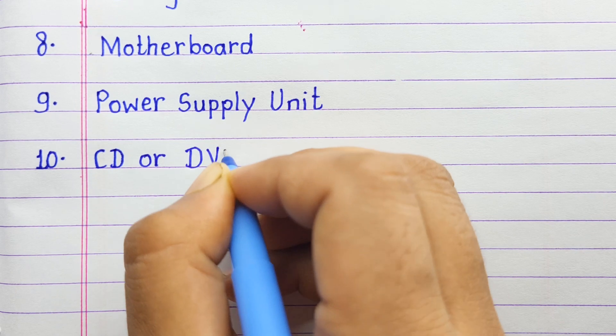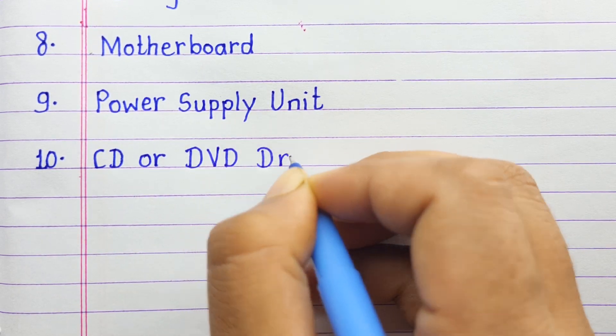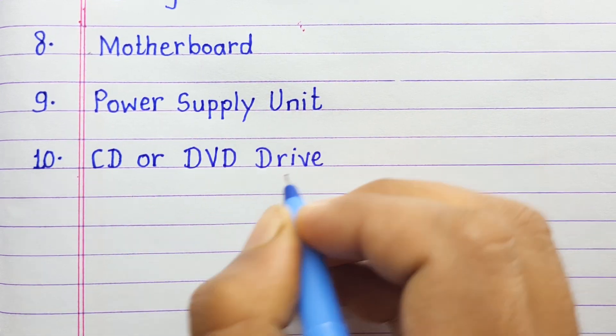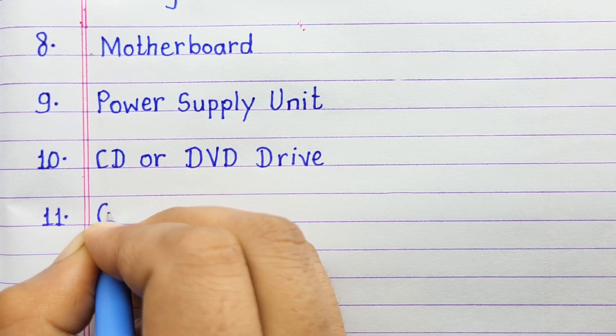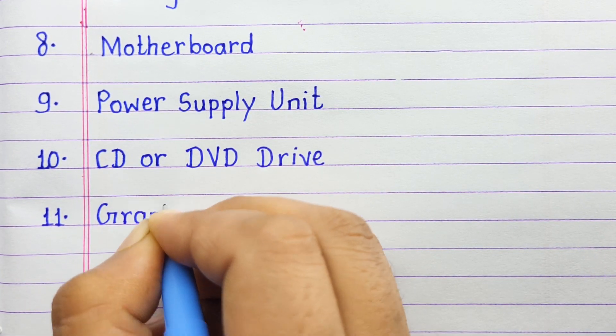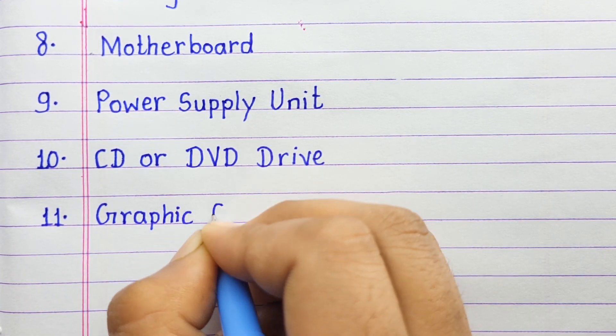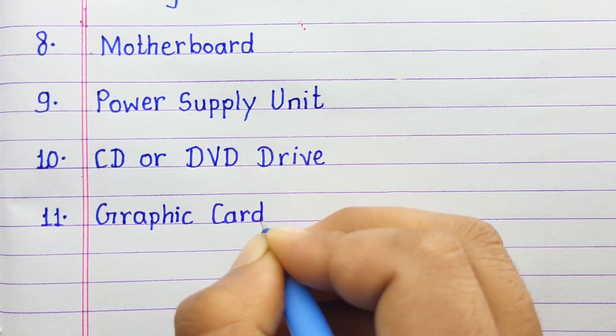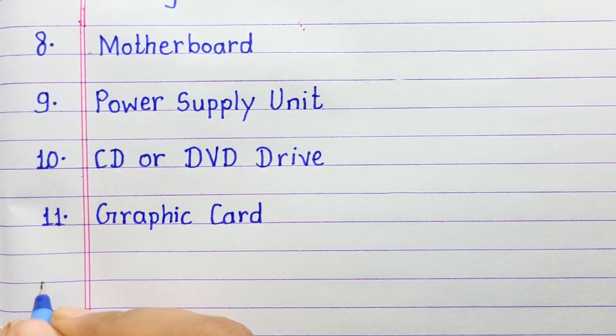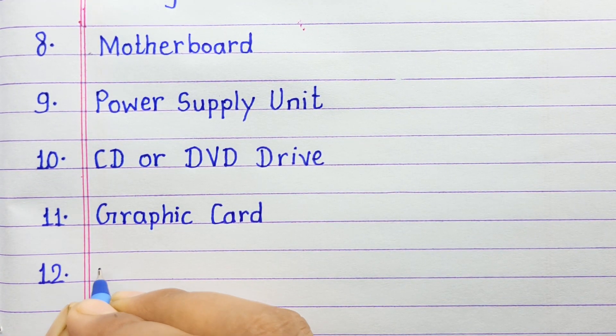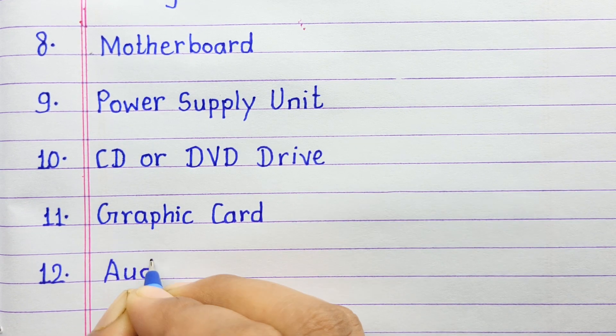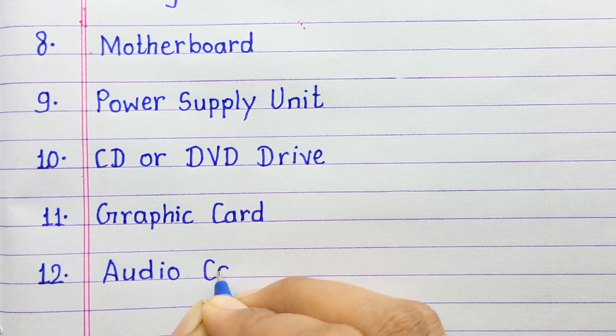Number ten: CD or DVD drive. Number eleven: graphic card. Number twelve: audio card.